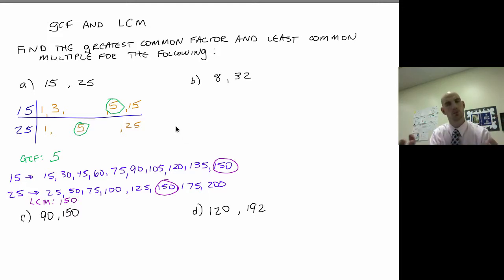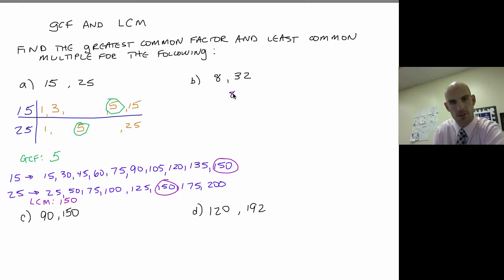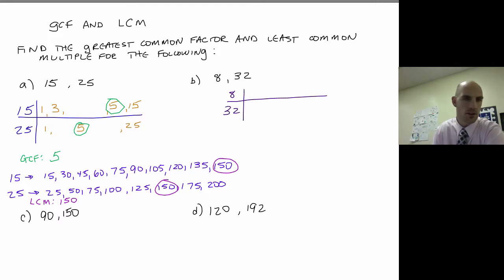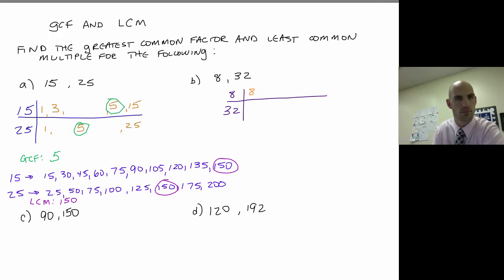I listed out the factors, listed out the multiples, and found which was which. Let's try the next example: 8 and 32. Maybe you're sitting there thinking you already know what the least common multiple is — you already know it's 32. Let's look at where that comes from. Greatest common factor first.